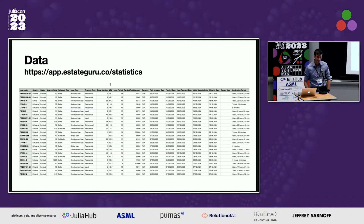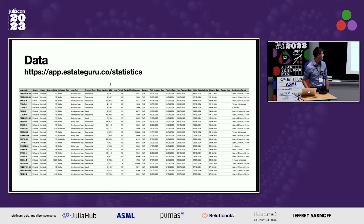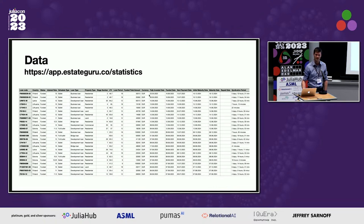Estate Guru provides a CSV of all their historical loans with lots of descriptive information. A few rows of that data show columns like the country, interest rate, loan type, and many other variables describing what's happening underneath each loan. You can sign up to Estate Guru today and download that data yourself.